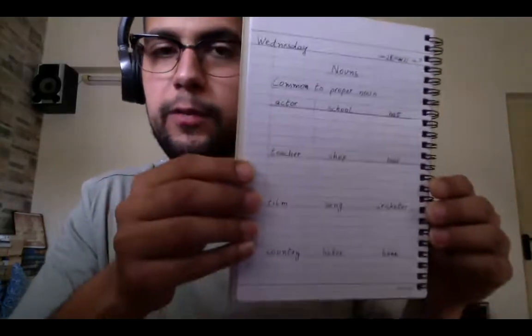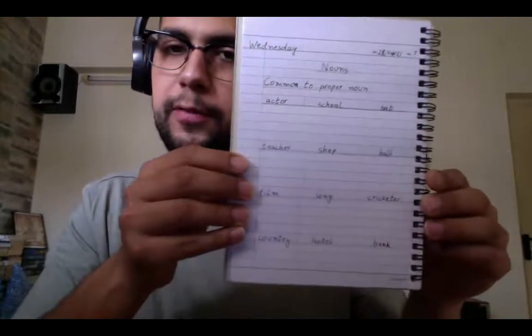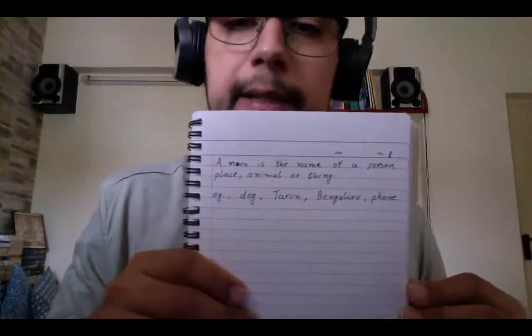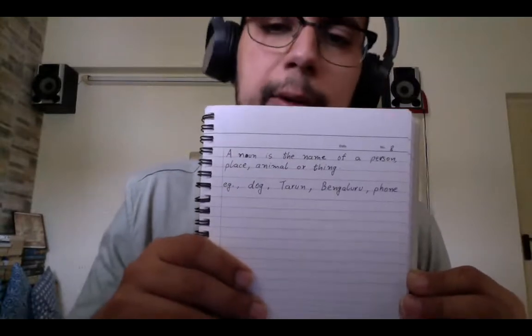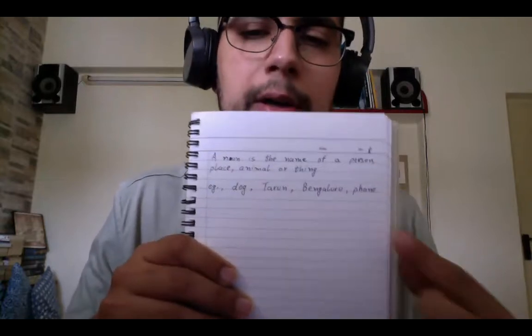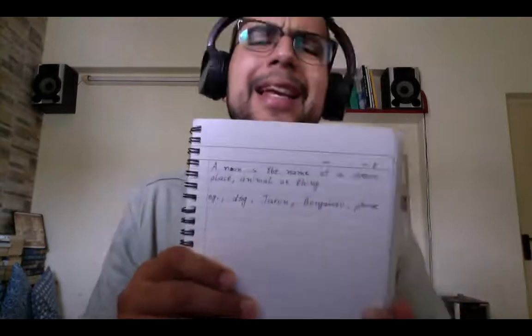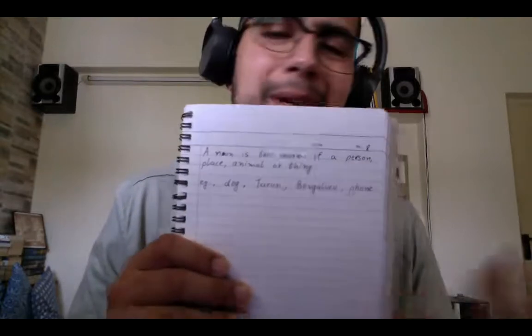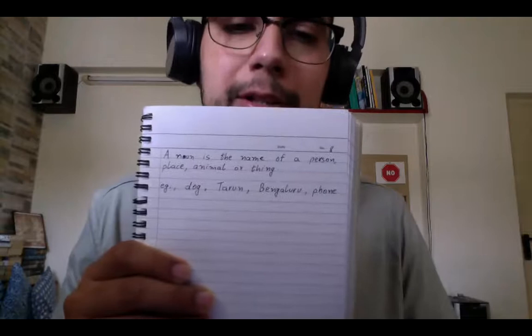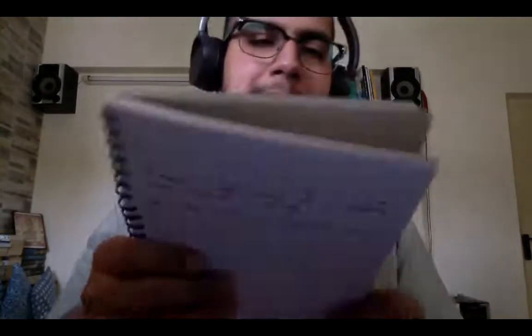I will send you this picture and you will fill it in yourselves, then send me photos of your finished table. After that, on the next page I want everyone to write this down: a noun is the name of a person, place, animal or thing. I've written dog, Tarun, Bengaluru, phone — you can write anything. You can write your favorite animal, your name, the name of your village. You can write the name of anything. So that is your homework today — have fun!